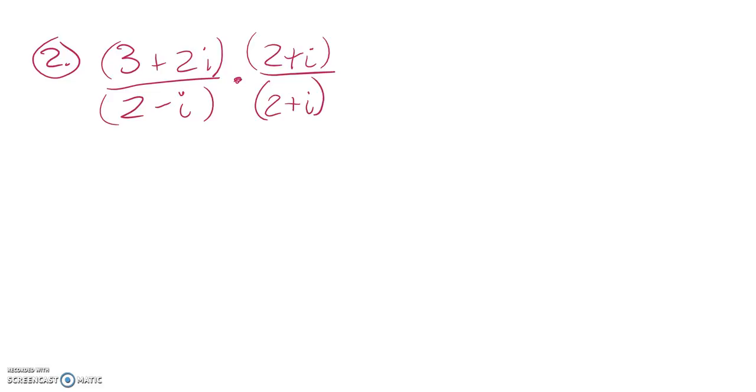So let me multiply out the denominator first. 2 times 2 is 4. Negative i times i, that's negative i squared, but I know that i squared is negative 1, so it's a negative negative 1. So in the denominator, 4 plus 1, which is just 5.